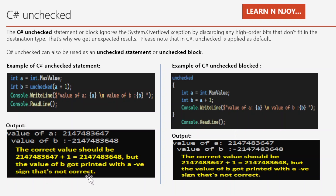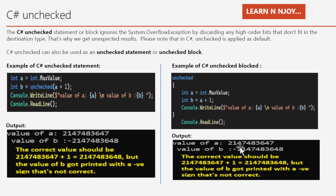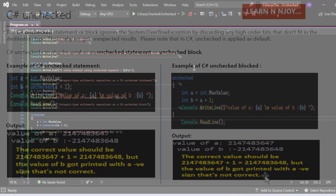For the unchecked block example, I write the unchecked keyword followed by curly braces, and inside: int a = int.MaxValue, int b = a + 1, then print both values. Since I haven't written the unchecked statement on individual lines, the unchecked context from the block is applied to all statements within the braces. The output again shows value of a as the max int, and value of b as a negative number — which is incorrect.